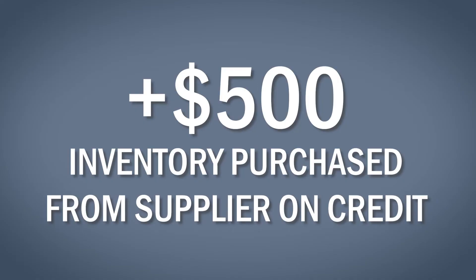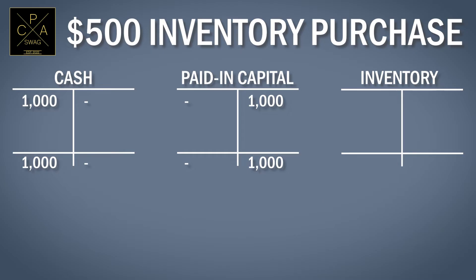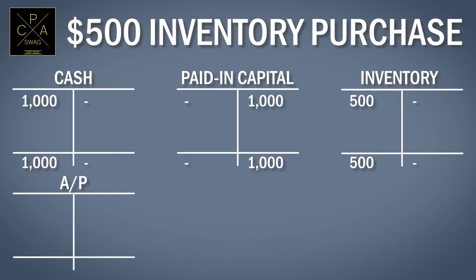We now want to buy T-shirts for the company, which will be our inventory to sell to customers, purchased from a supplier on credit. We purchase inventory from a supplier for $500 on credit. As inventory is an asset account with a normal debit balance, we debit inventory to increase it. Since we purchased on credit, we also need to increase our liabilities via accounts payable. Accounts payable is a liability account with a normal credit balance, so we credit the accounts payable T-account. So far we have: cash of $1,000, inventory of $500, accounts payable of $500, and paid-in capital of $1,000.